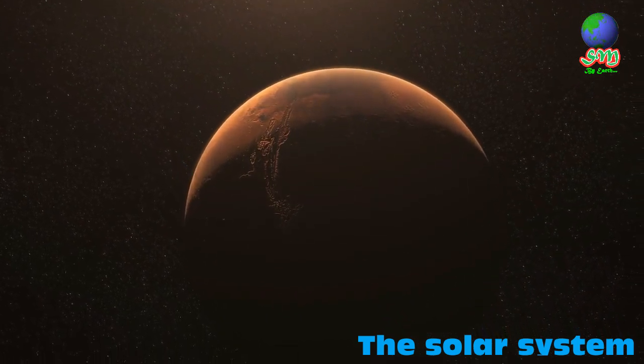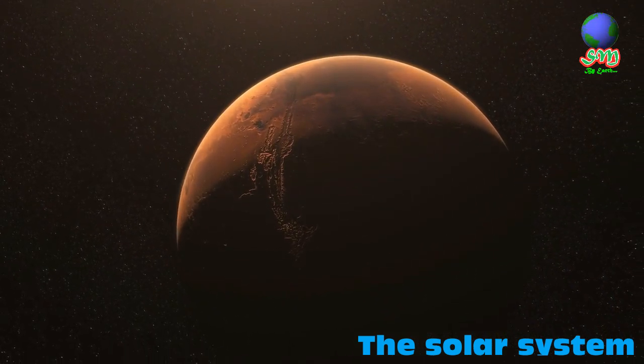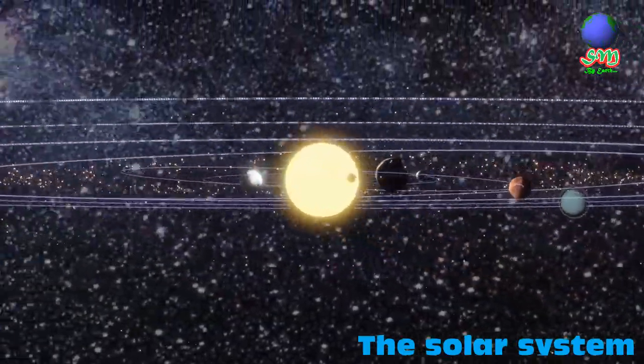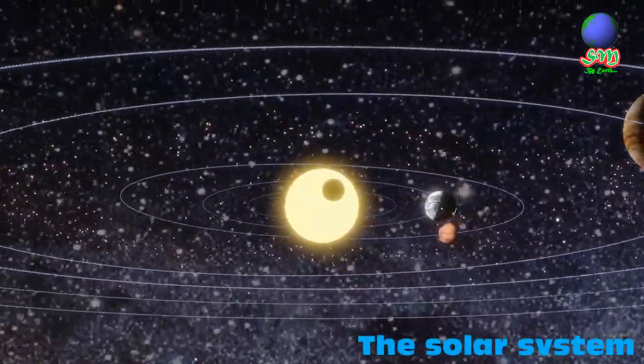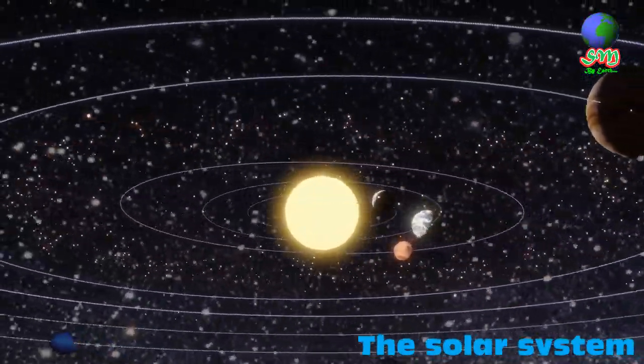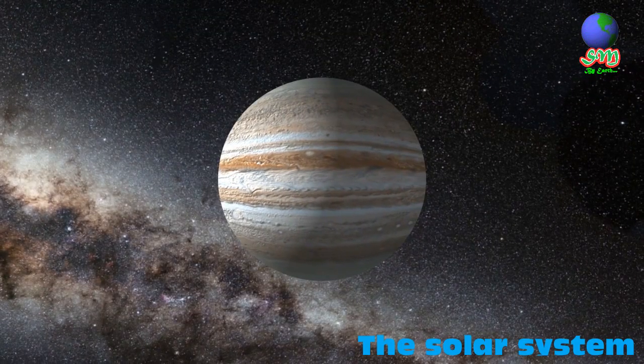4.6 billion years ago, the solar system was formed by the gravitational collapse of a giant interstellar molecular cloud. The sun holds most of the mass of the entire solar system, and Jupiter holds most of the rest.